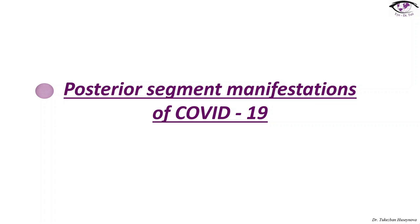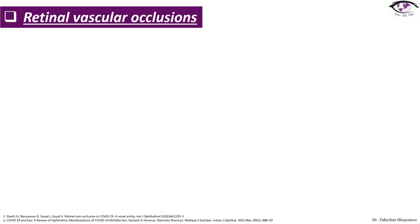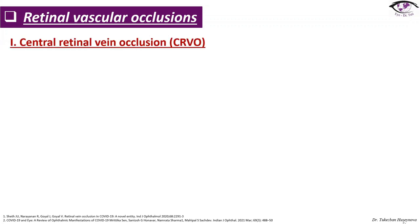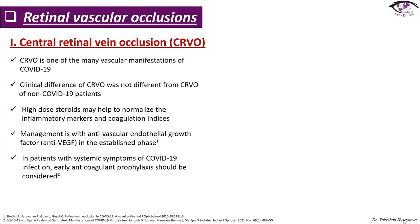Posterior segment manifestations of COVID-19. Retinal vascular occlusions — starting with central retinal vein occlusion (CRVO). CRVO is one of the many vascular manifestations of COVID-19, and its clinical difference from CRVO in non-COVID-19 patients was not significant. High dose steroids may help to normalize inflammatory markers and coagulation indices. Cystoid macular edema was treated with anti-VEGF therapy, and in patients with systemic symptoms of COVID-19 infection, early anticoagulant prophylaxis should be considered.